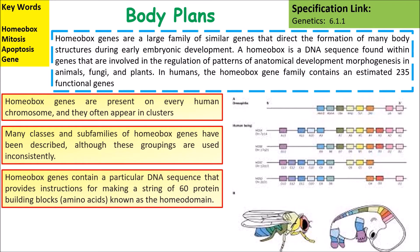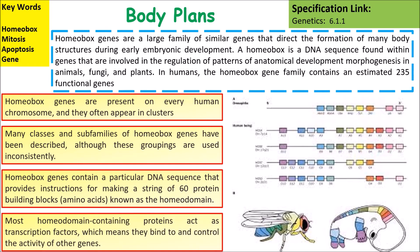Homeobox genes contain a particular DNA sequence that provides instructions for making a string of 60 protein building blocks made out of amino acids, known as a homeodomain. Most homeodomain-containing proteins act as transcription factors, which means that they bind to and control the activity of other genes.